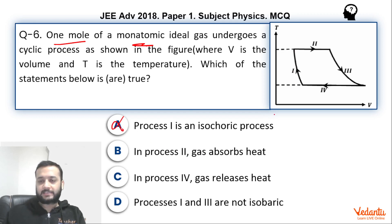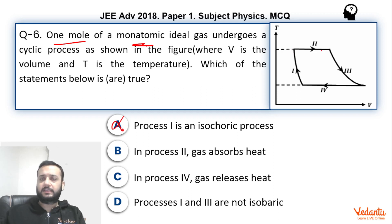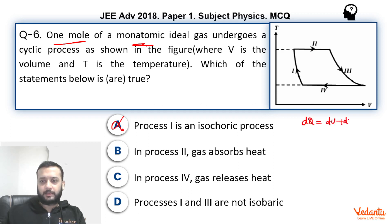In Process 2, the gas absorbs heat. If you see Process 2, it's an isothermal expansion. In isothermal expansion, there is no change in internal energy of the gas. But since DQ = DU + DW, and DU is zero but work done is positive, the gas will absorb heat. So this option is correct.